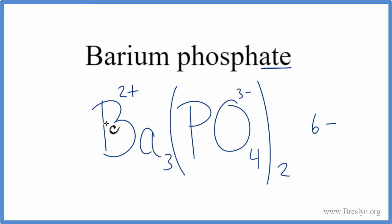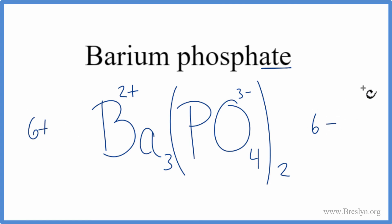For barium, we have three bariums. 3 times the 2+ equals 6+. So 6+ and 6− adds up to 0 — we have a net charge of 0. This is the correct formula for barium phosphate.